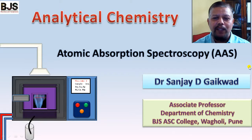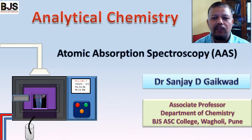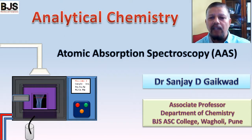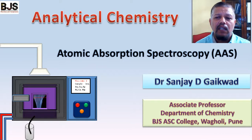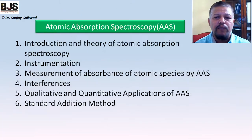Atomic absorption spectroscopy is a technique for determination of metal ion concentration. It is an absorption technique — light is absorbed, and by measuring the absorption we can determine the amount. When the atom goes to a higher energy level at the atomic level, it absorbs the radiation, and from that absorption we can determine the concentration.